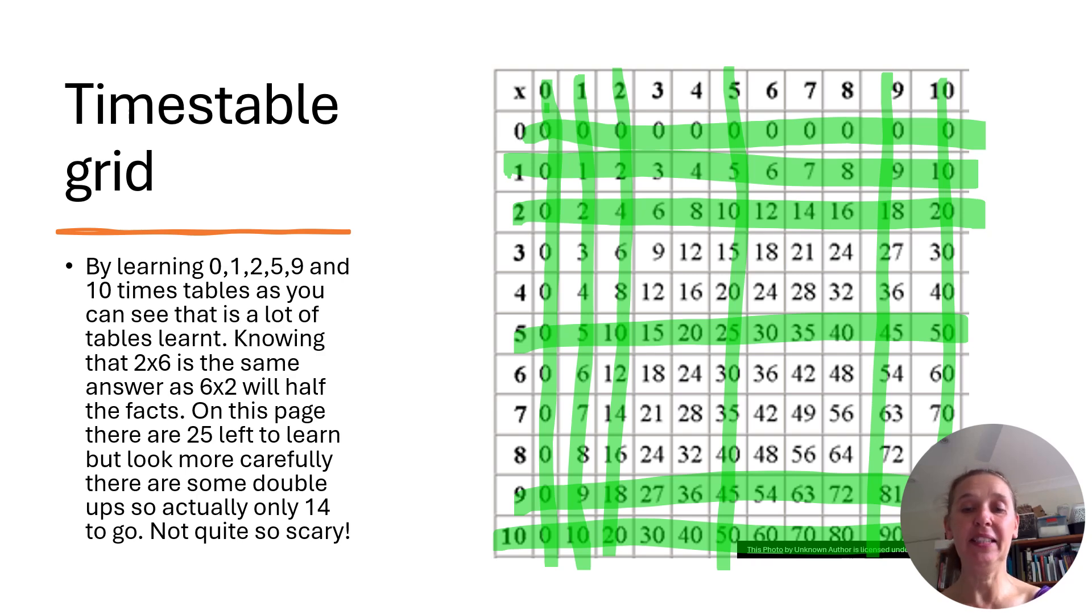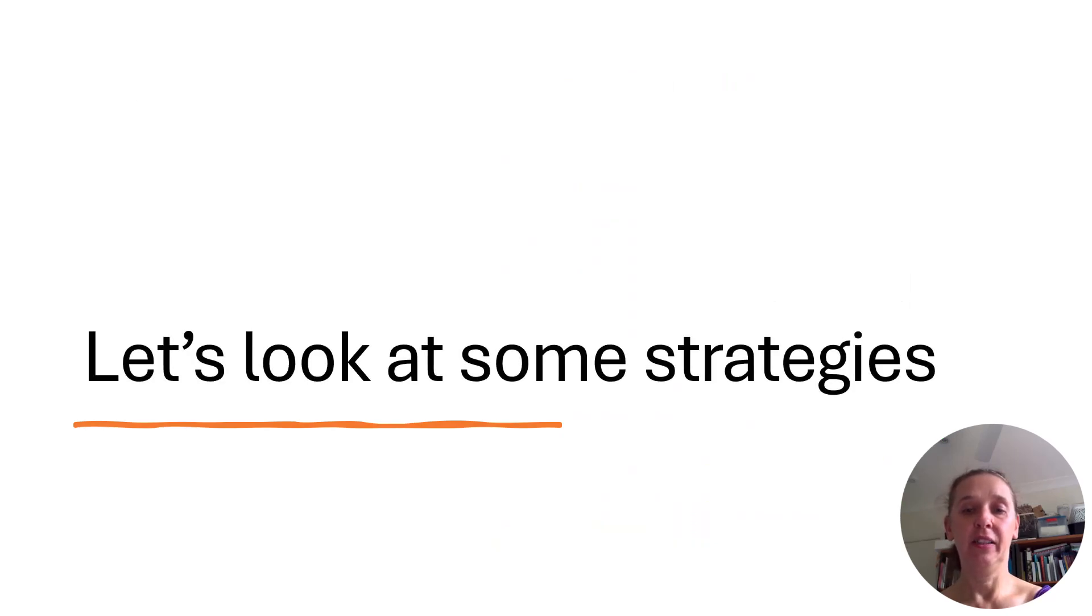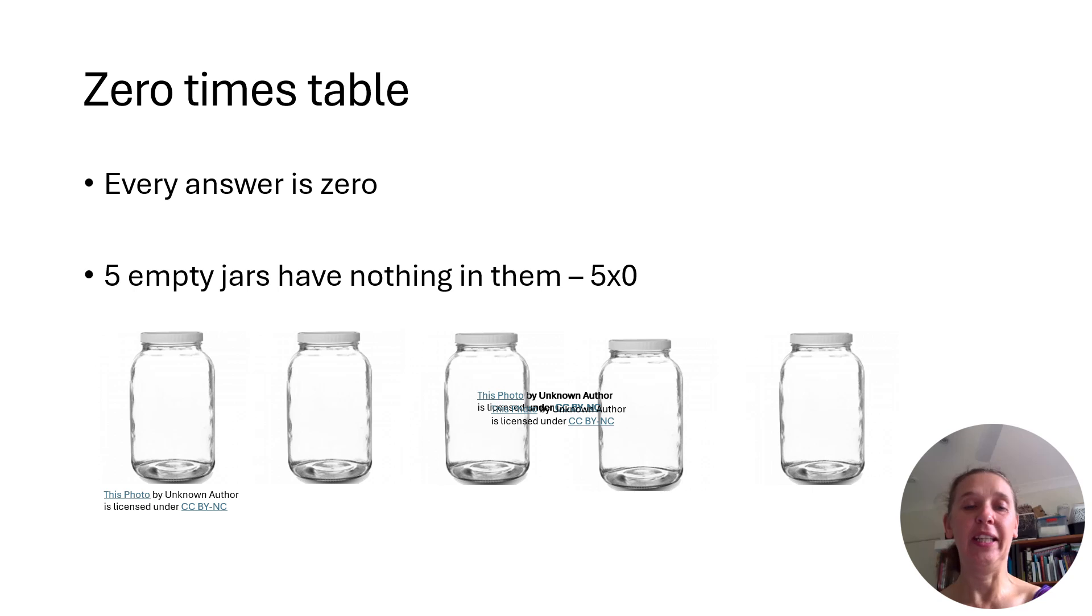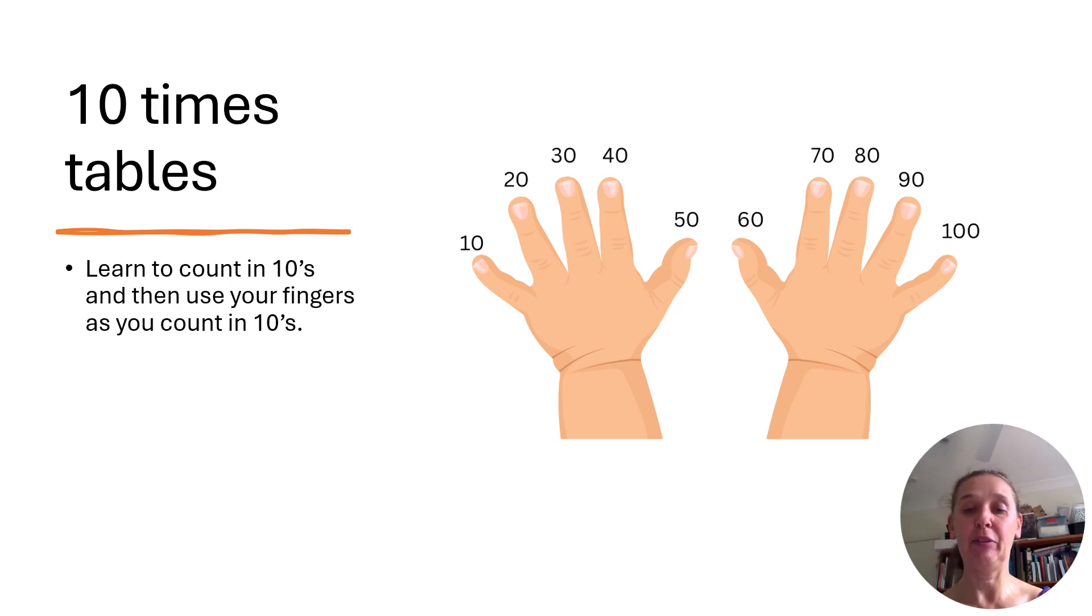So zero times table is easy because it's always zero. And I explain that to children by looking at empty jars. So if we've got five times zero, five empty jars, we have nothing. So the answer is always going to be zero. Two times table, we teach children to skip count in twos from late prep or definitely in year one, and they can use that. So they just practice counting by twos and then use their fingers in order to work out how many times they've counted up. So that's a good one.